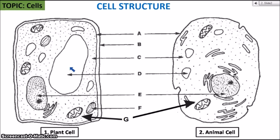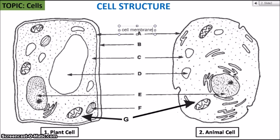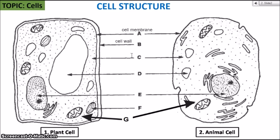We're going to examine the cell structure and focus on the differences and similarities between the plant cell and the animal cell. These are the two main cells you should know how to label. A is the cell membrane — you can see based on the label lines that the ones pointing at both cells represent the organelles present in both. So the cell membrane is present in both the plant and the animal cell. B is the cell wall, which you only find in the plant cell.